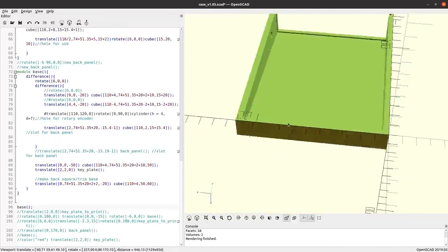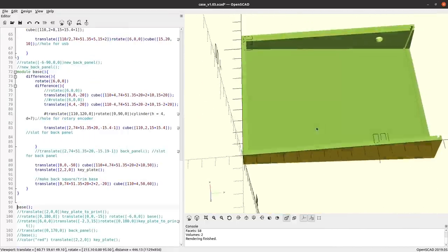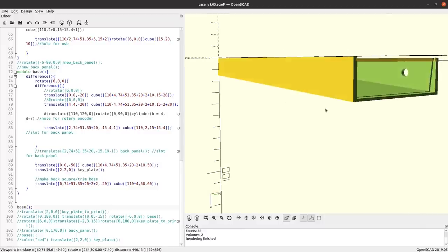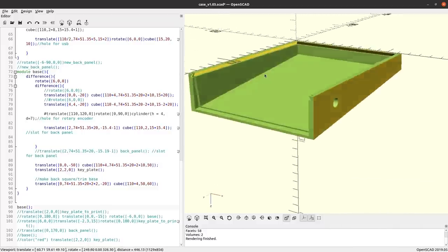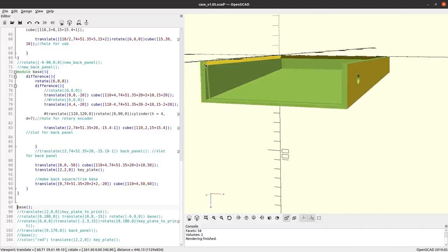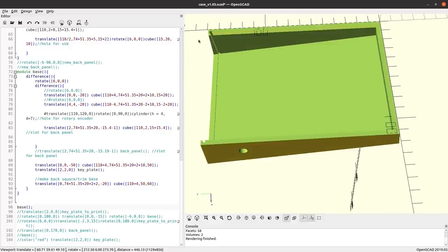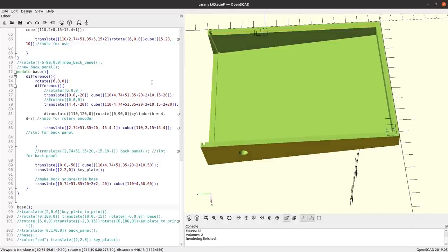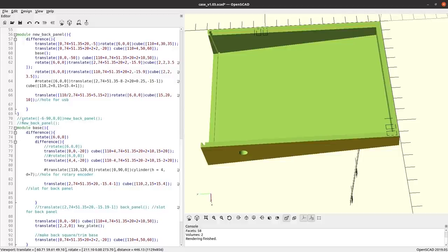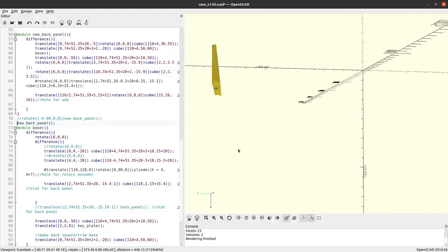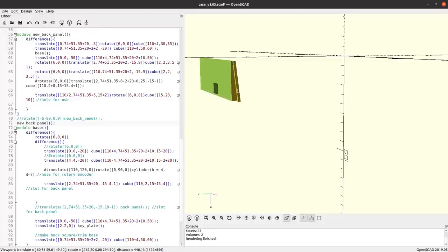So that's the keyplate. And then the base is a box which is set on a six degree angle. I've subtracted the keyplate so I've got this perfect recess on three sides for it to slide in. There's a hole there for the rotary encoder and then there's this slot at the back.